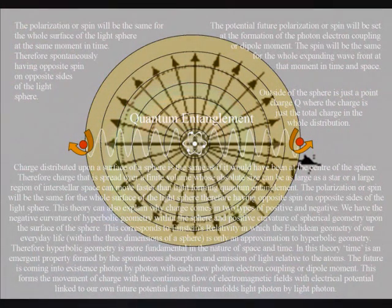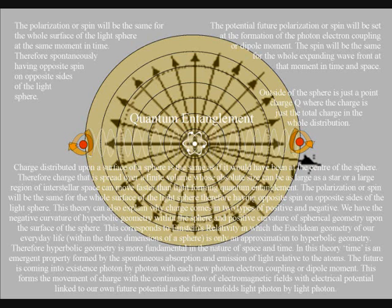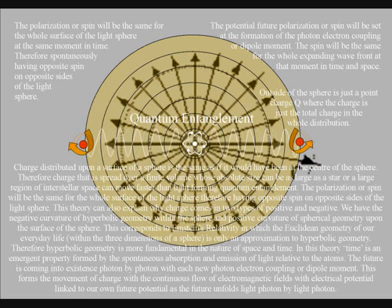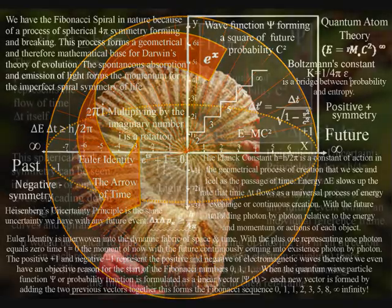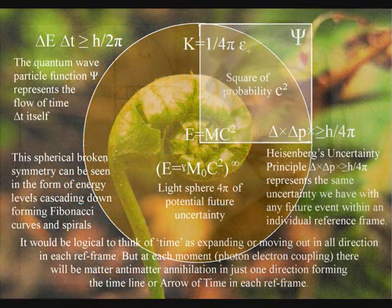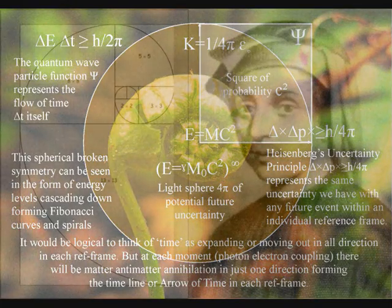This dynamic geometry can explain quantum entanglement, with photons having opposite spin, or polarization, on opposite sides of the sphere. This is fundamentally a process of spherical symmetry forming and breaking, that forms the imperfect symmetries that are visible in nature. We have the chaos and uncertainty of everyday life, formed by a geometrical process, and this geometry can be seen in our everyday life as a Fibonacci spiral.